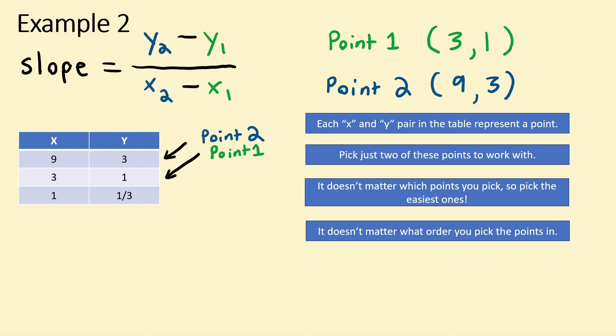Now let's start plugging numbers into our formula. y2 is 3, y1 is 1, x2 is 9, and x1 is 3. Now we can solve. 3 minus 1 is 2, over 9 minus 3, which is 6.